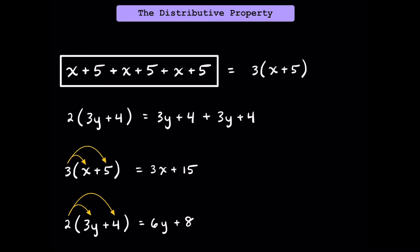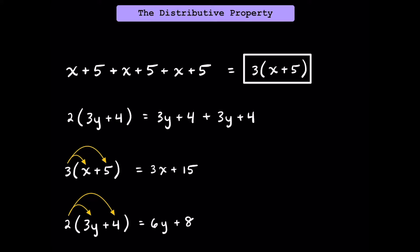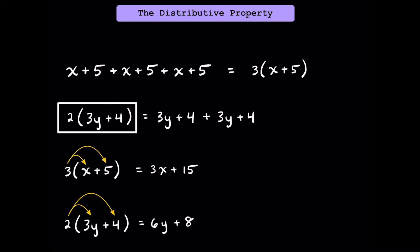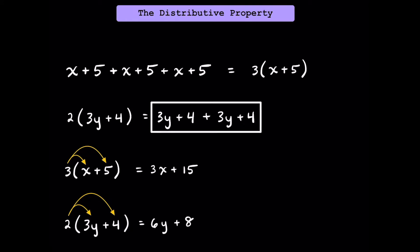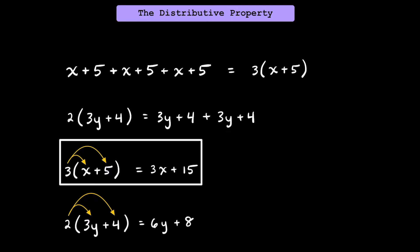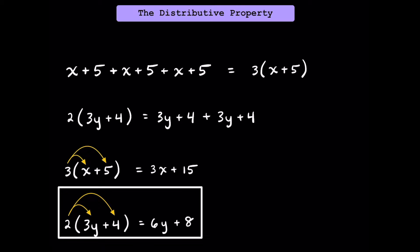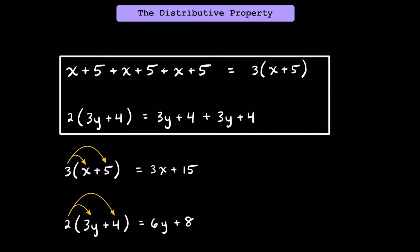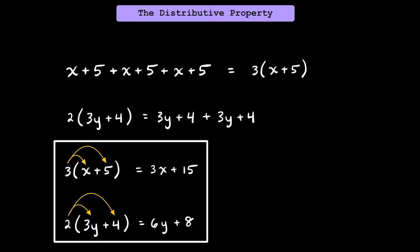Simply put, we can take a longer algebraic expression and condense it into a shorter expression. We can also take a condensed expression and expand it. Having three groups of x plus 5 really means we have three x's and three fives, or 15. Having two groups of 3y plus 4 really means we have six y and two fours, or eight. This represents the distributive property, which helps us simplify algebraic expressions faster.